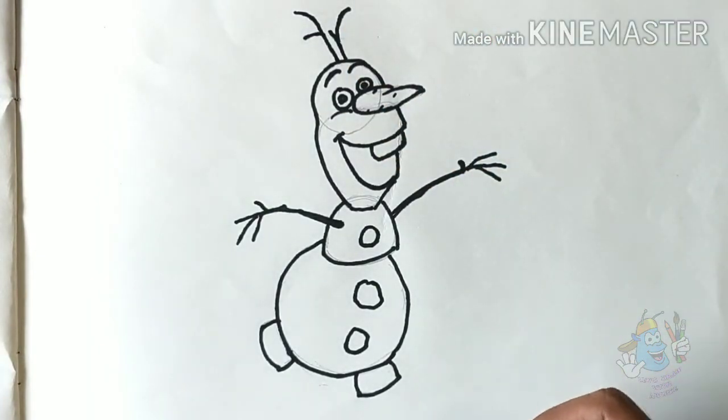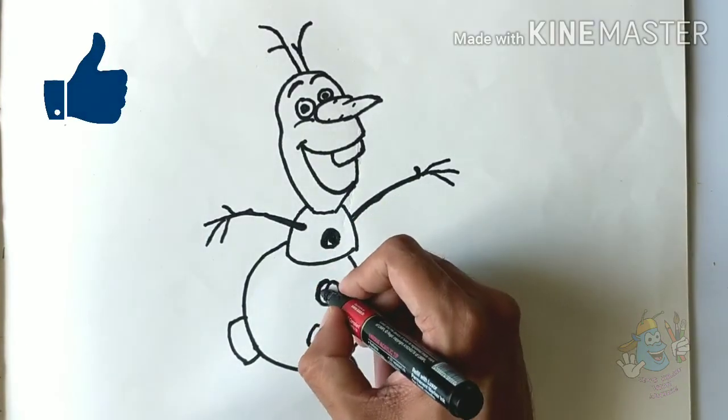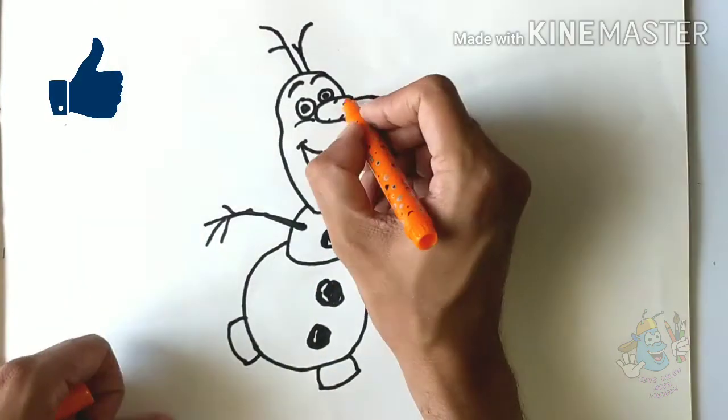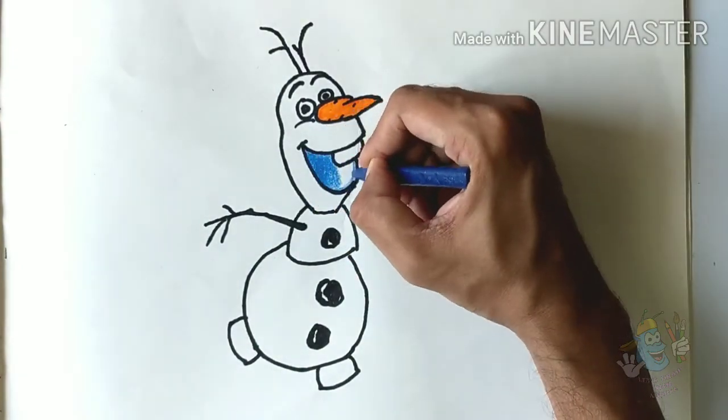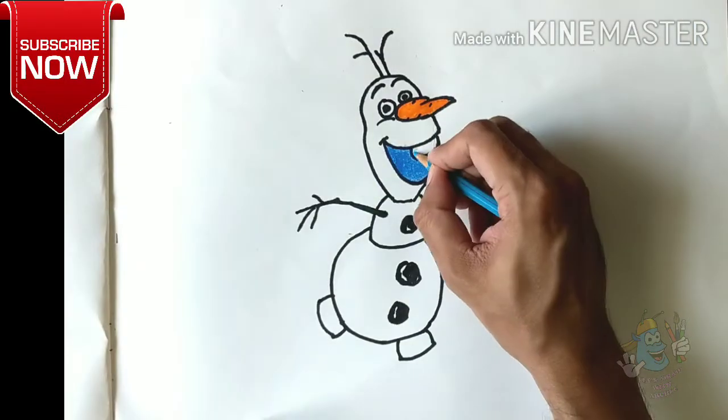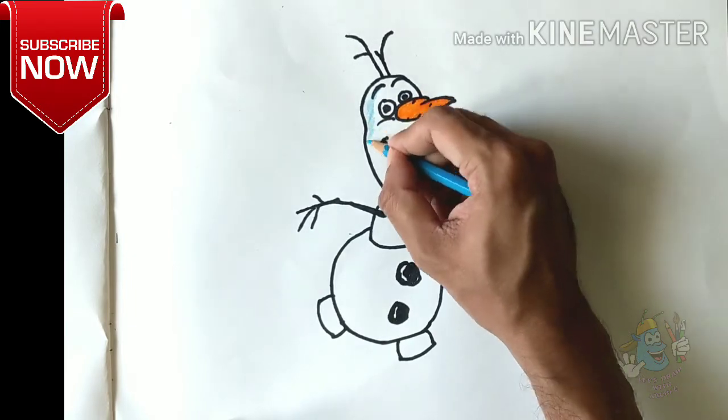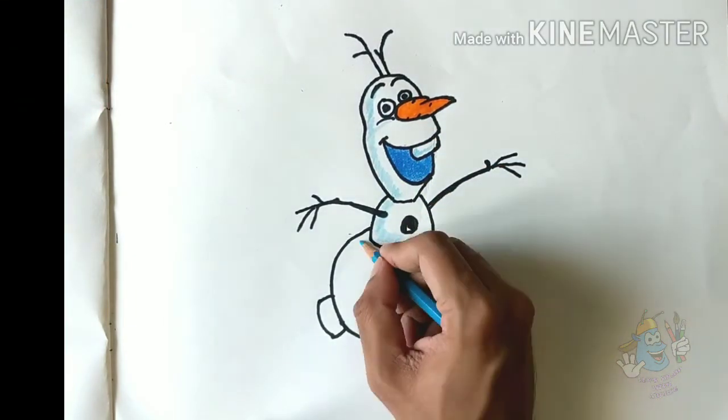And we're done. Let's just finish coloring him. Bright orange for the nose. Dark blue for the inside of his mouth, and just shade it using white blue.